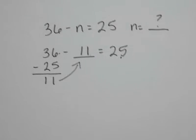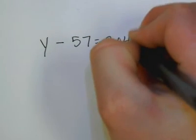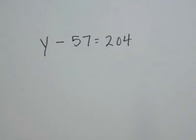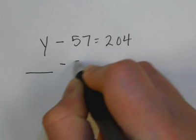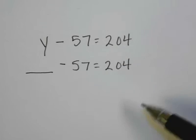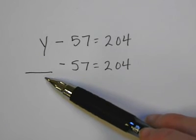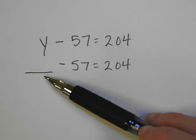All right, let's look at another problem. If I have y minus 57 is equal to 204. First thing that I would have students do is rewrite this problem and put a blank instead of the letter. So blank minus 57 is equal to 204. Then they would sing the song. If the blank is in the middle for subtraction and division do the same as the symbol to get the answer right.